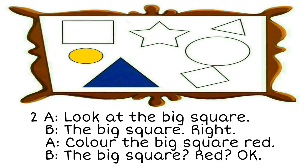Two. Look at the big square. The big square? Right. Colour the big square red. The big square red. OK.